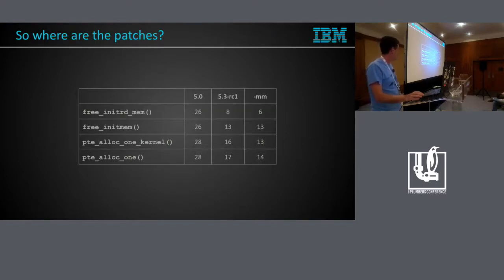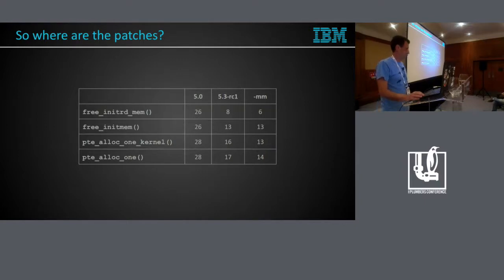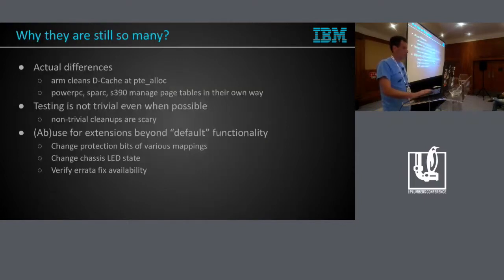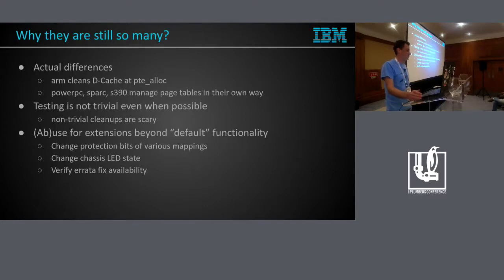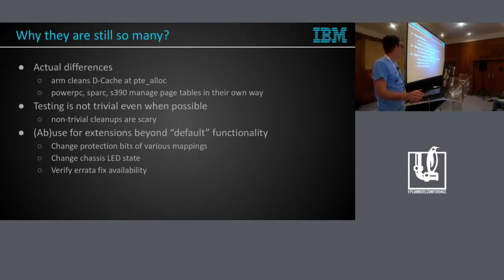I did some other reductions and we could reduce it by a substantial amount. There is still more left to do, but sometimes you really can't do much because architectures do different things in apparently simple macros or helpers — like ARM likes to play with its caches when it does allocation of page table pages. Several architectures have their own logic for managing page tables that is completely different from others.